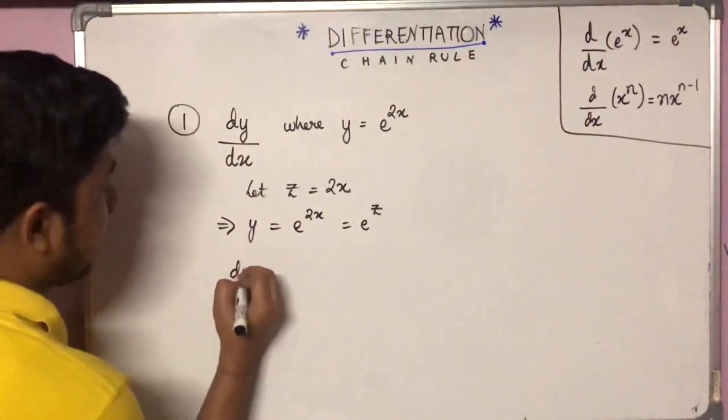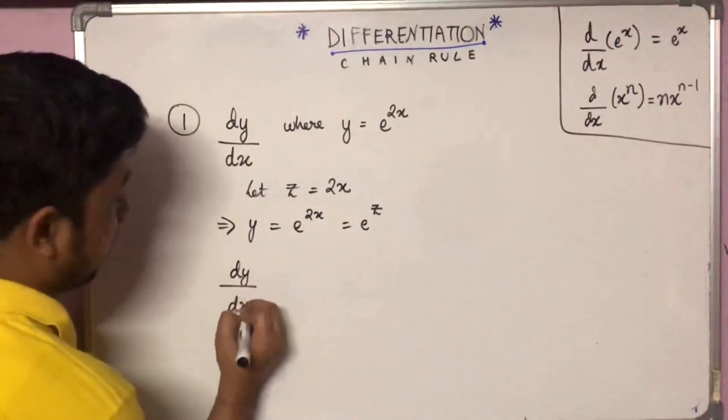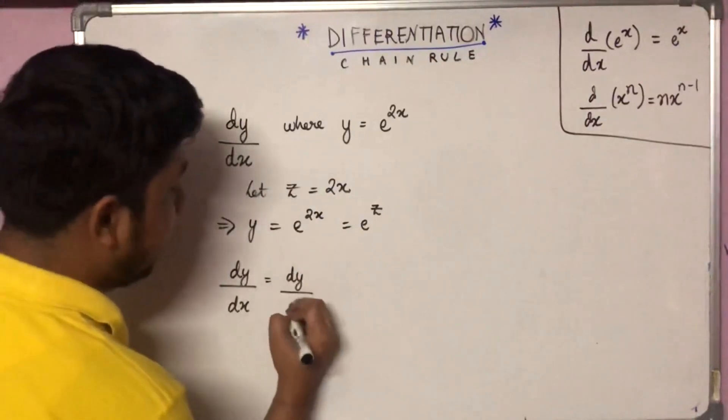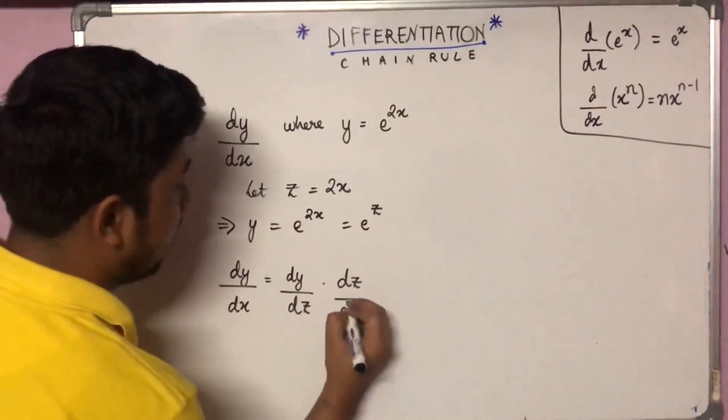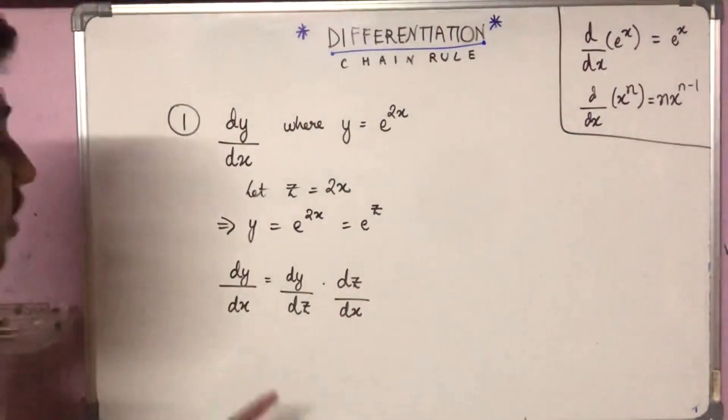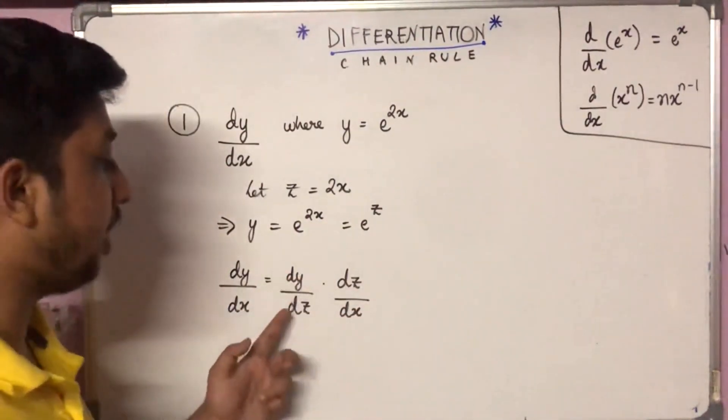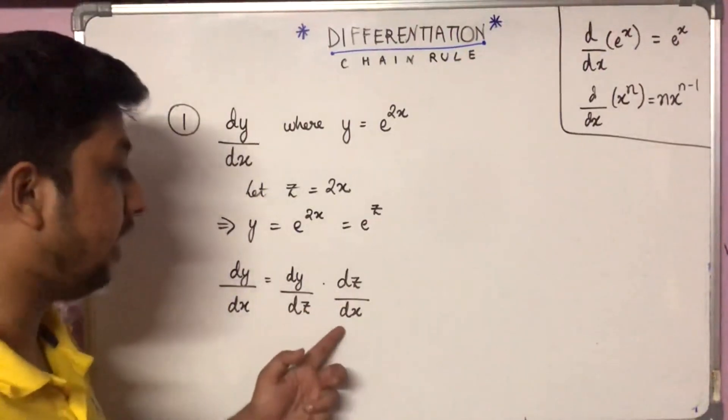Now we can say that dy/dx equals dy/dz times dz/dx.